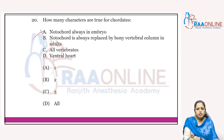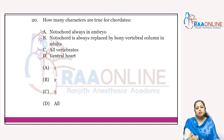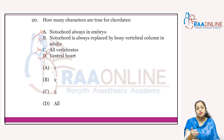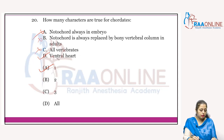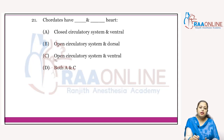How many characters are true for Chordates? Notochord is always present in embryo — wrong as stated in absolute terms. Notochord is always replaced by bony vertebral column in adults — no. All chordates are vertebrates — no. Ventral heart — yes, the heart is ventrally situated in chordates. The central nervous system is dorsal, hollow, and single. Pharynx is perforated by gill slits. Ventral heart is present — only one option is correct.